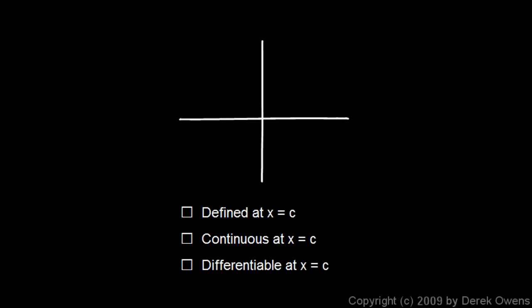We're still talking about differentiability and continuity, and what we're going to do now is look at several examples of functions. For each one we'll discuss briefly whether the function is defined at a given point, whether it's continuous, and whether it's differentiable at that point. If you're taking notes on the printed page, you can sketch in each function and then put a little check or X in the boxes.